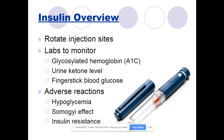There are adverse reactions related to insulin. You can have hypoglycemia. The Somogyi effect is when you do have hypoglycemia, but it's followed by a rebound hyperglycemia — you think you've corrected the problem, maybe even overcorrected, and it comes back even worse. There is also insulin resistance, which we alluded to earlier.